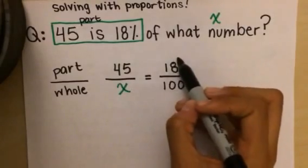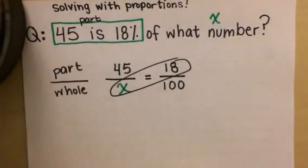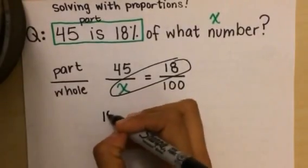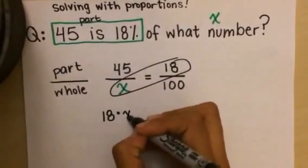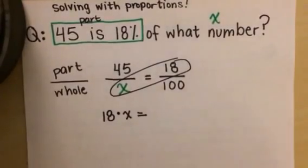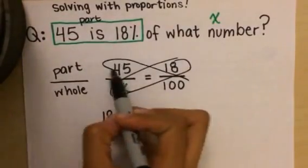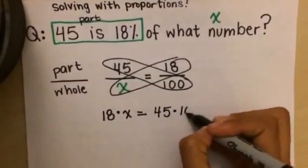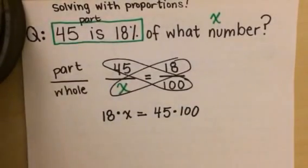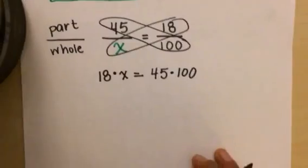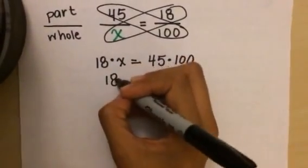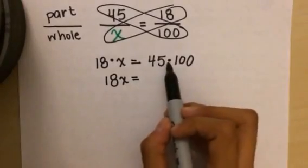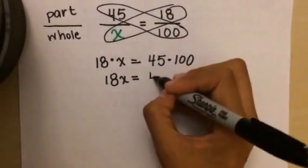multiplying. That's where all I'm doing is multiplying across: 18 times x is equal to—multiply the other way—45 times 100. 18 times x we can rewrite as 18x is equal to 45 times 100, which is going to give me 4,500.